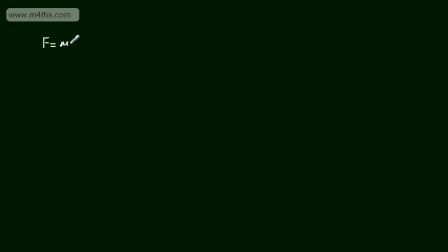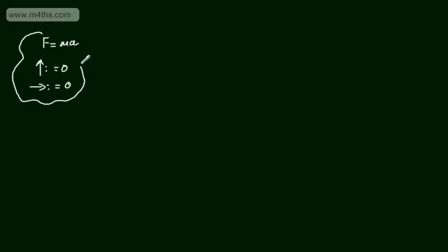Let's start off with equilibrium. If a body is in equilibrium, the resultant force in any direction will be zero. So if we use Newton's second law, F is equal to Ma, and we resolve vertically, the resultant will be zero. If we resolve horizontally, the resultant will be zero. There is no acceleration. So that's equilibrium.